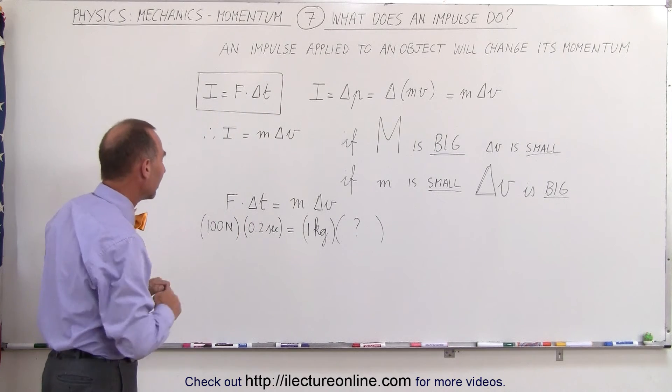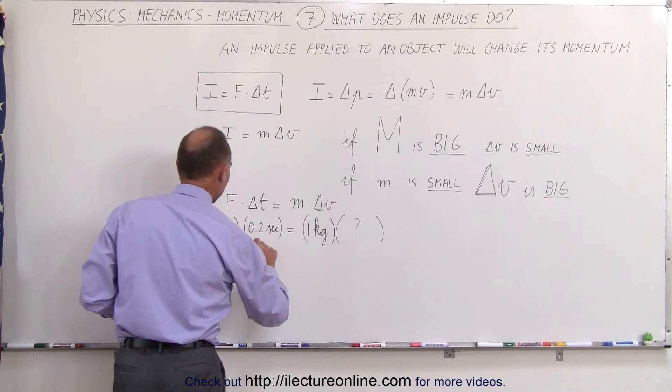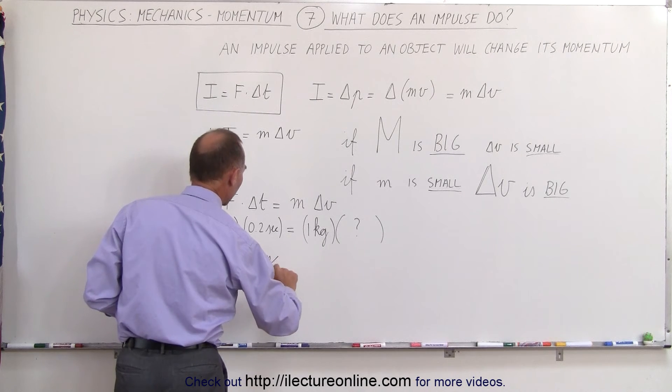Well, what we can do is multiply the left side together to get the impulse, and this would be 20 kilogram meters per second.